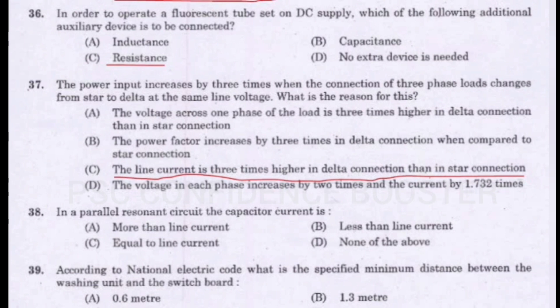Question number 38. In a parallel resonance circuit, the capacitor current is: Option A - More than line current. Option B - Less than line current. Option C - Equal to line current. Option D - None of the above. Answer is Option A: More than line current.